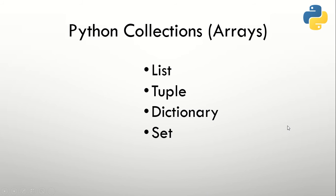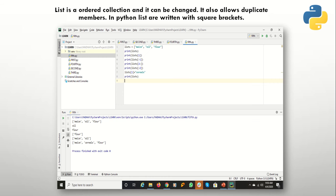As I told you earlier, number, string, and boolean are the basic types we use in Python. But there is also a collection of values given different names. We will discuss four particular ones in this video: list, tuple, dictionary, and set.